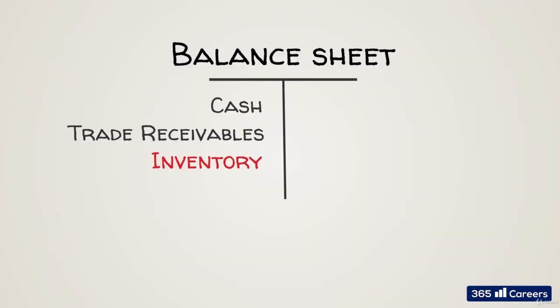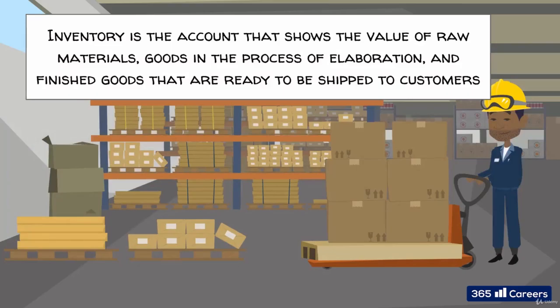Inventory is the account that shows the value of raw materials, goods in the process of elaboration, and finished goods ready to be shipped to customers. The company has these goods in its warehouse, in production facilities, or in stores. Finished goods are products ready to be sold, while raw materials and work-in-progress goods require additional processing. Raw materials are the basic components needed to create the product, and work-in-progress goods are products that have gone through a few stages of elaboration but are not yet ready to be shipped.